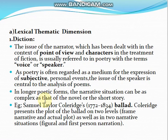An example is Samuel Taylor Coleridge's ballad. Coleridge presents the plot of the ballad on two levels: frame narrative and actual plot, as well as in two narrative situations: figural and first-person narration. Coleridge used the ballad form, and in his poetry — such as Ancient Mariner — he employed a frame narrative structure to present his poem.